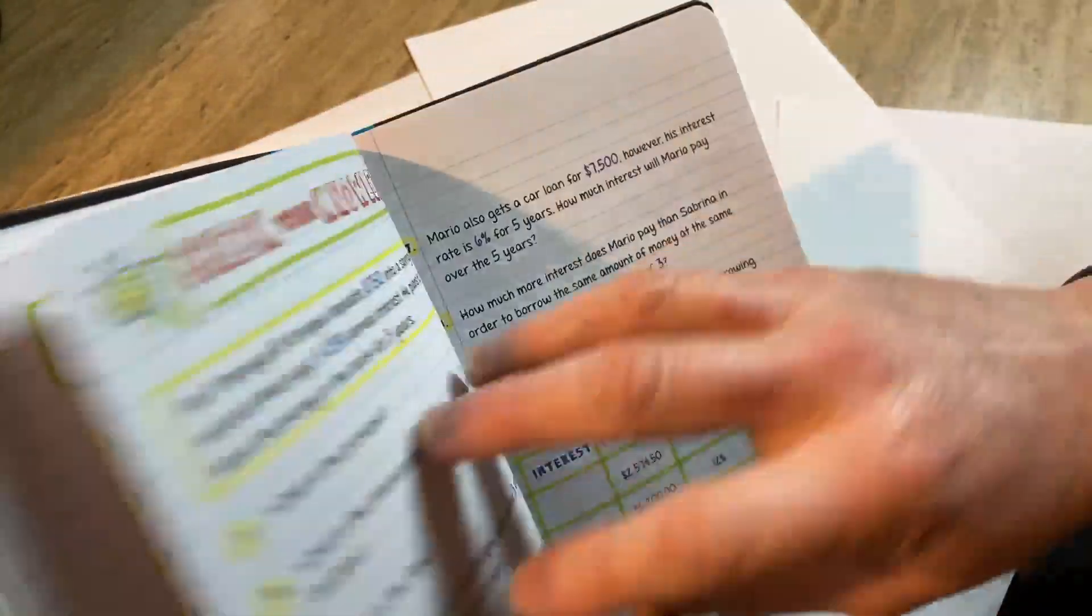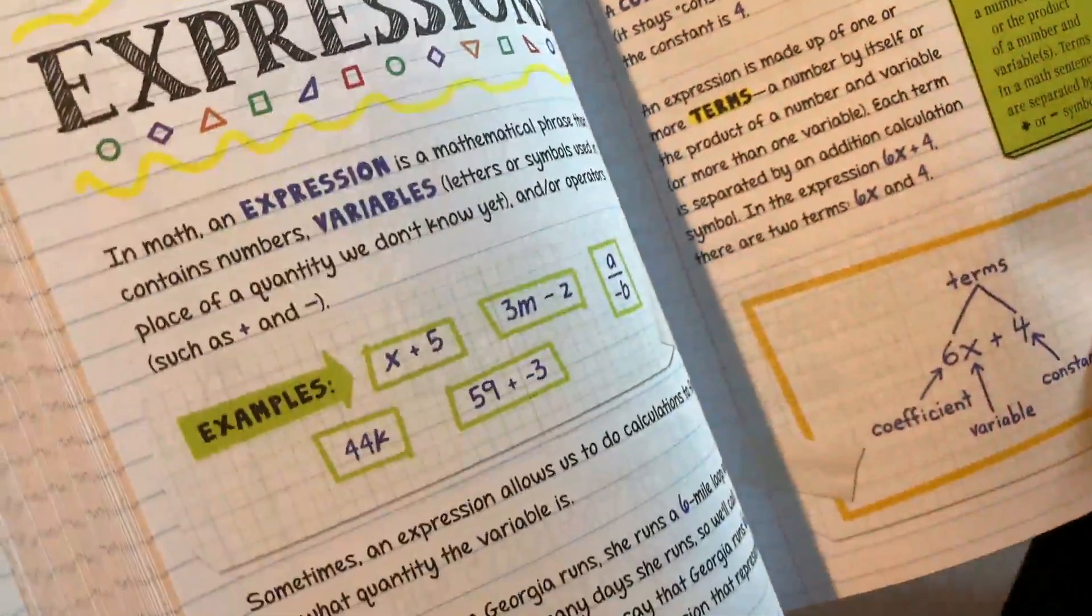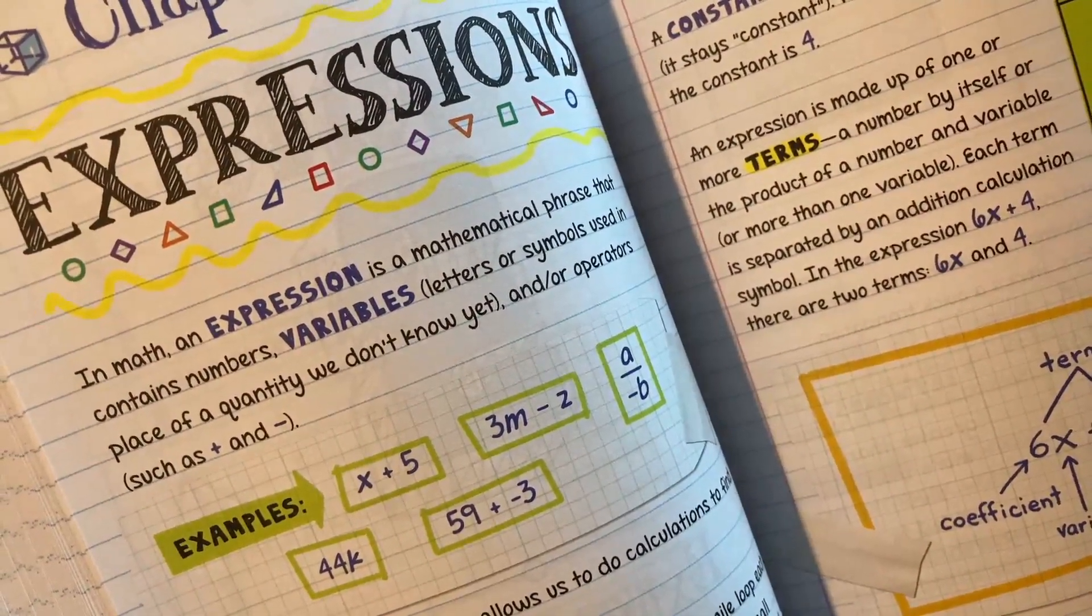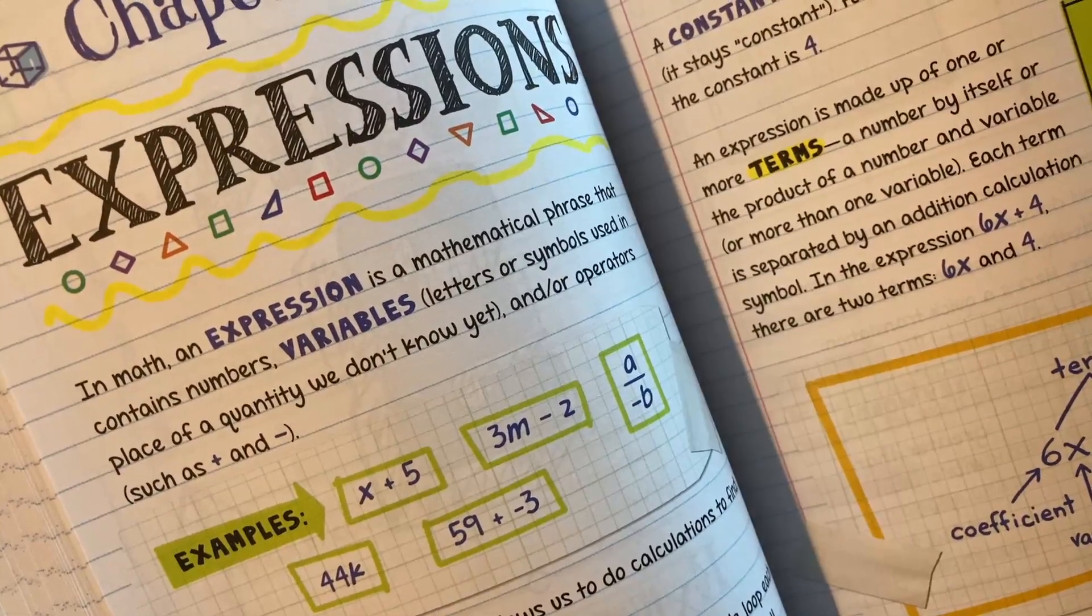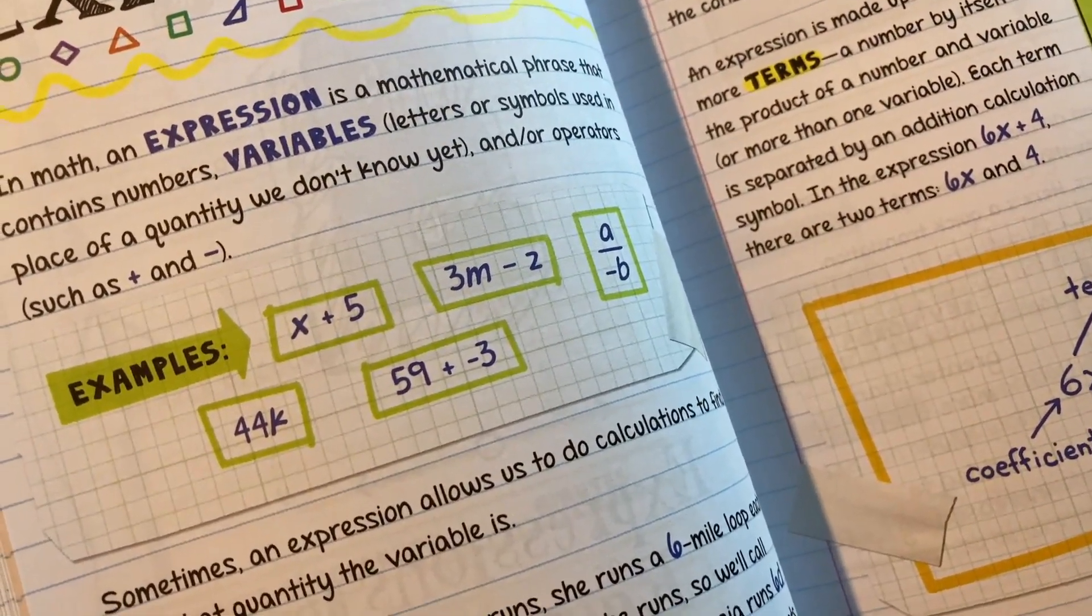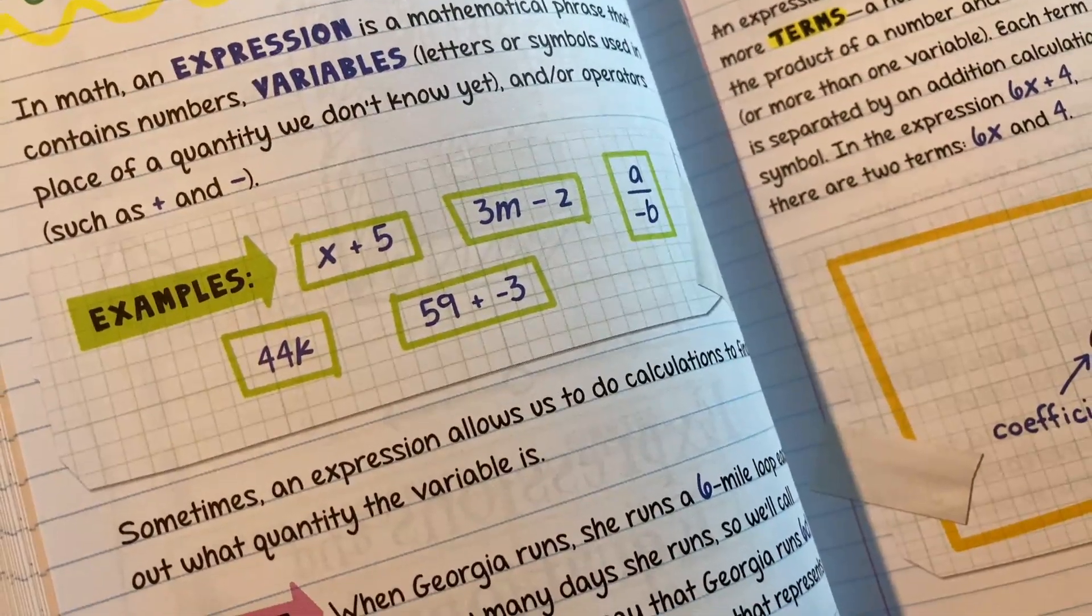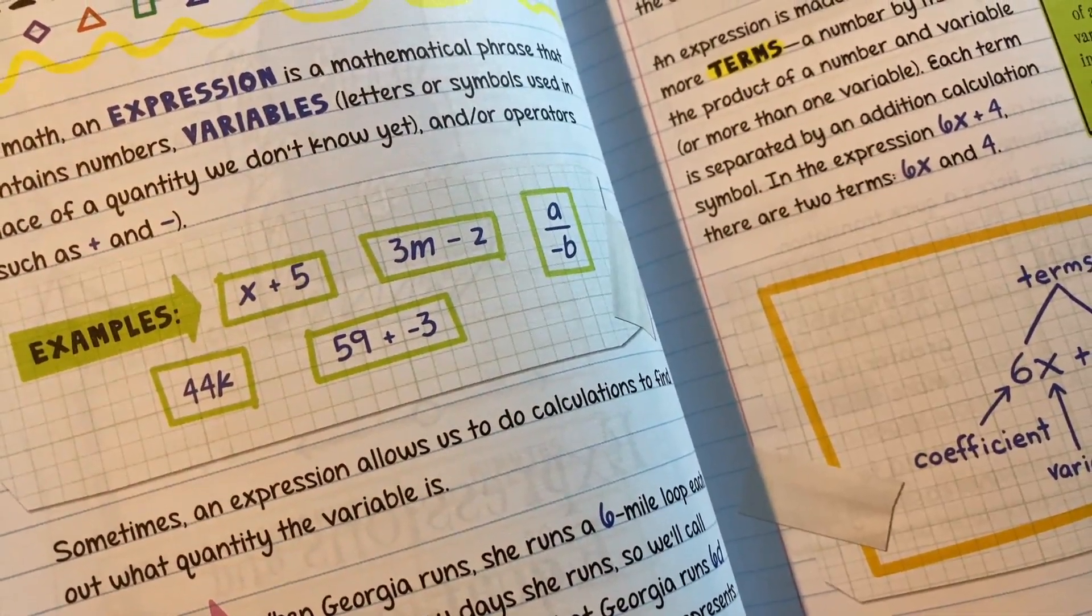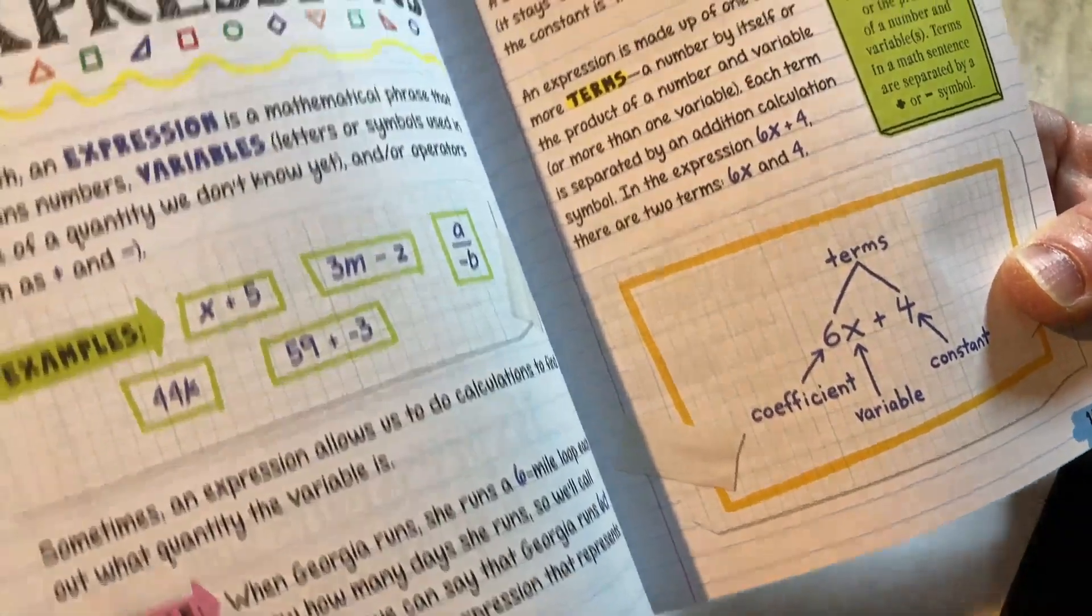Let's look at some of the sections in this book so you can see what it's like. Here it talks about expressions. In math, an expression is a mathematical phrase that contains numbers, variables, letters or symbols used in place of a quantity we don't know yet, and operators such as plus and minus. So here we have examples: X plus 5, 3M minus 2, A over negative B, 44K, 59 plus negative 3. Sometimes an expression allows us to do calculations to find out what quantity the variable is. And then here it gives you an example so you can learn.